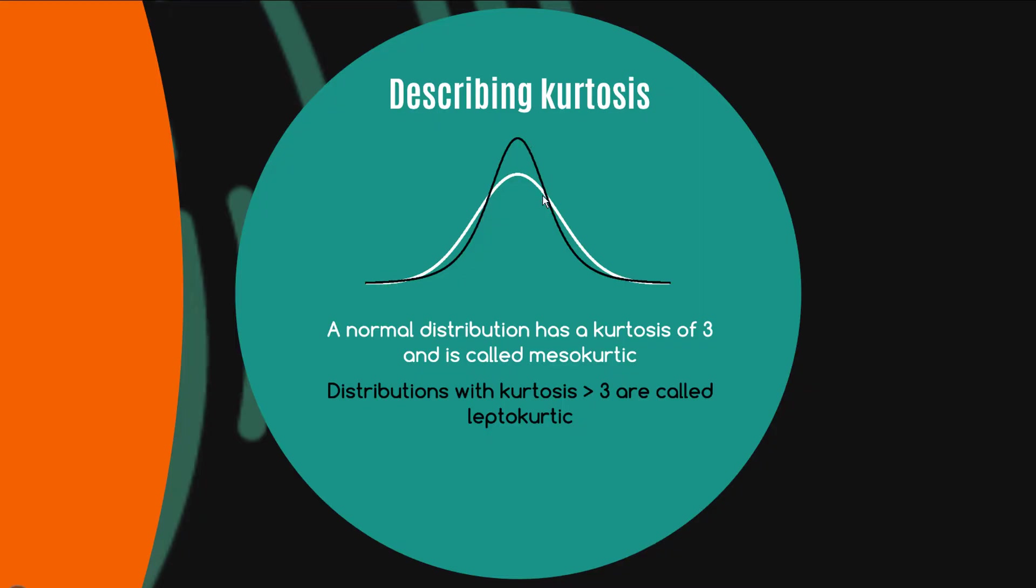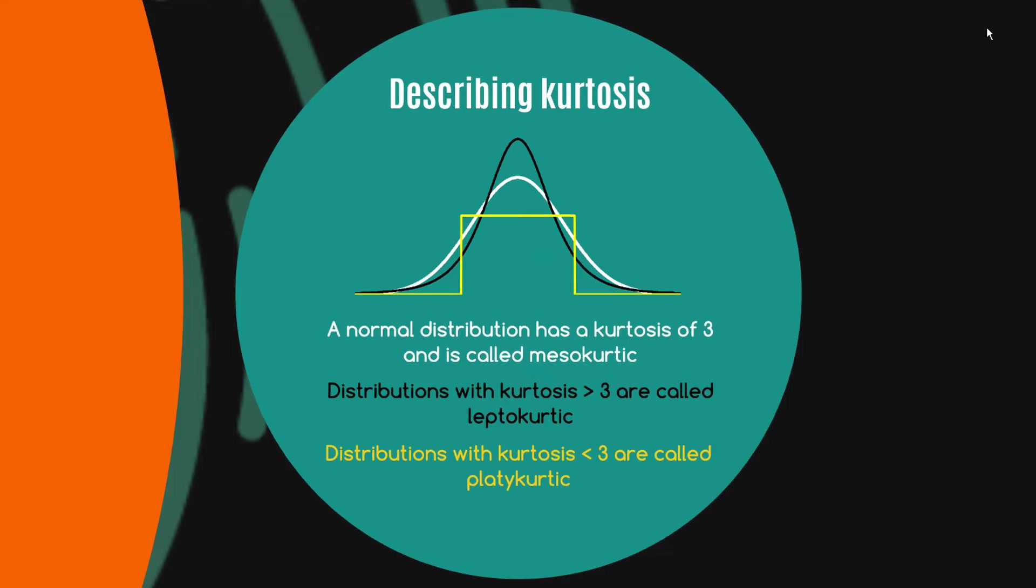Distributions with a kurtosis greater than three are called leptokurtic. So we saw that at the beginning—if you have a more pronounced kind of central region and longer tails, you might say it's leptokurtic. And distributions with the kurtosis less than three—and here I've actually got a uniform distribution—but we'll call that platykurtic. It'd be less than three if you have broader shoulders, if you like, but a flatter central bit and shorter tails—a more stocky distribution one might say.